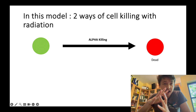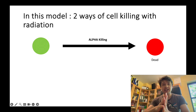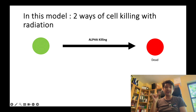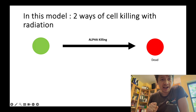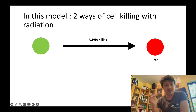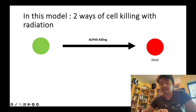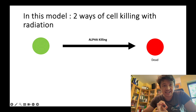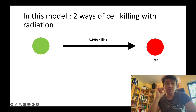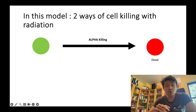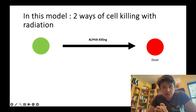The first one is the alpha killing. Alpha killing is when you deliver radiation and it touches something really important and your cell is instantly dead. There is no second chance, no possible second chance, no way of repairing itself.